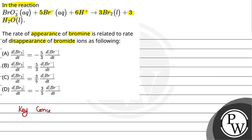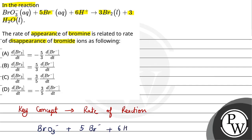In this question, the key concept we follow will be the rate of reaction. The equation given is BrO₃⁻ plus 5 Br⁻ plus 6 H⁺ gives 3 Br₂ plus 3 water molecules.